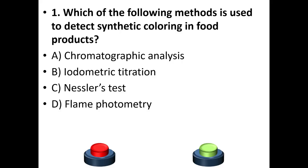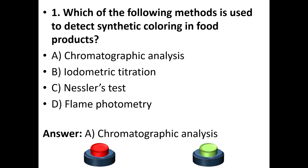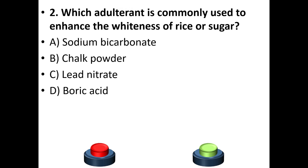First question: Which of the following methods is used to detect synthetic coloring in food products? A. Chromatographic analysis. B. Iodometric titration. C. Nessler's test. D. Flame photometry. Your answer is option A: Chromatographic analysis.